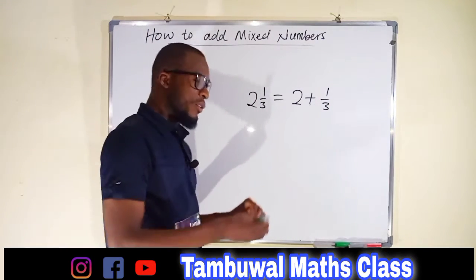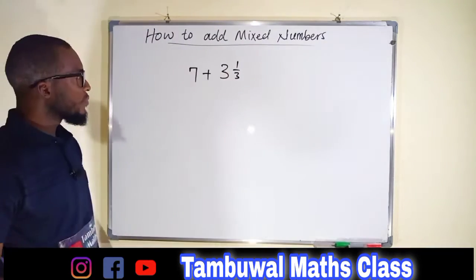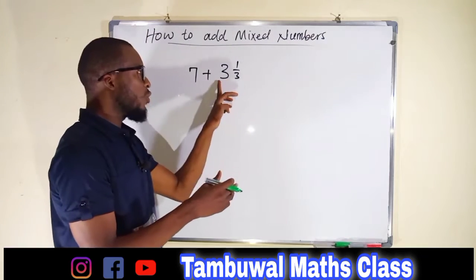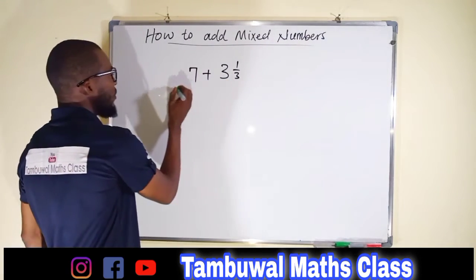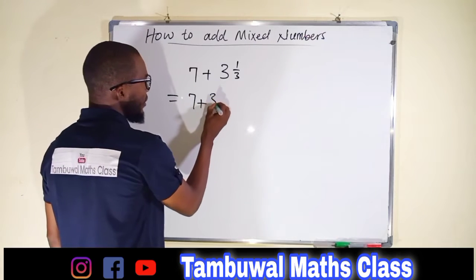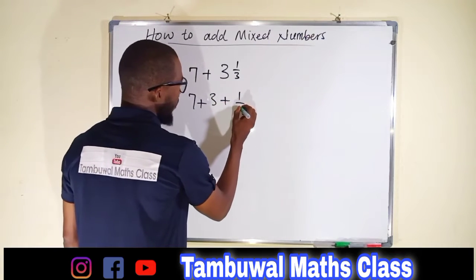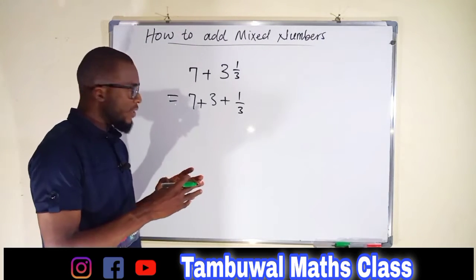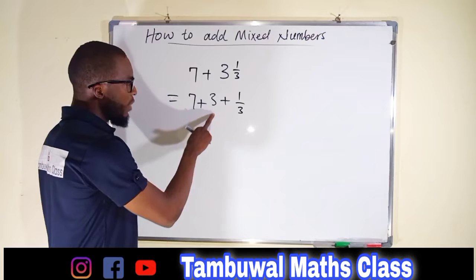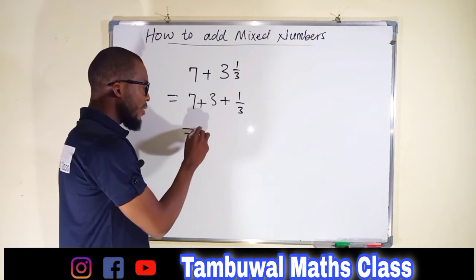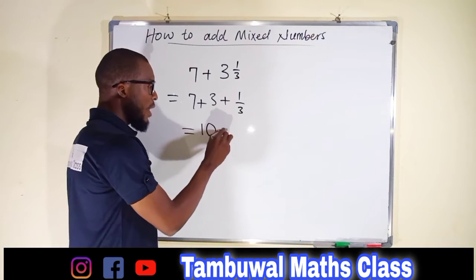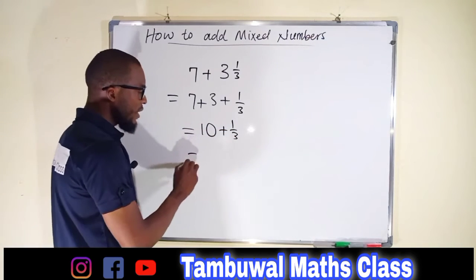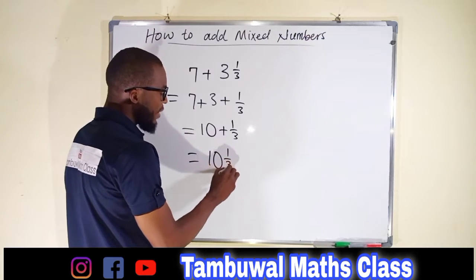Now let us add some mixed numbers together. Remember, a mixed number can be expressed as the sum of its whole number and its fraction. So this can also be written as 7 plus 3 plus 1 over 3. We are going to add the like terms together — the whole numbers and the fractions. Adding the whole numbers gives 10, and we have plus 1 over 3.